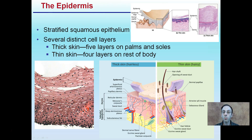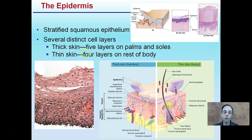The epidermis is the top layer — it's stratified squamous epithelium, which describes the type of cells. There are several distinct layers and two different types of skin. Thick skin has five layers and is found on the palms of your hands and soles of your feet. Thin skin has four layers and covers the rest of the body. Thin skin is where hair follicles are located, while thick skin does not contain hair follicles.